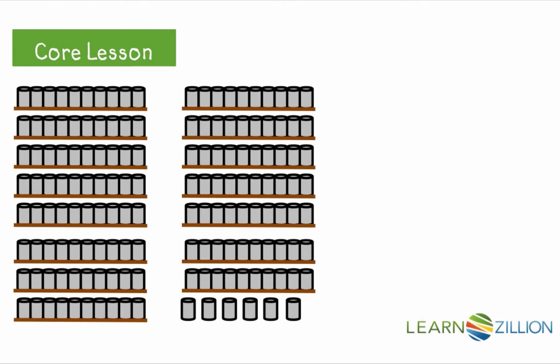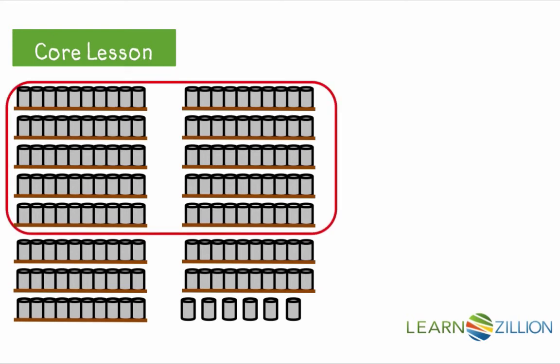Here are some shelves in a grocery store. Your job is to count the cans on the shelves. Each shelf has 10 cans. Remember, we know 10 groups of 10 equals 100. Look, we can combine 10 groups of 10 to show 100.